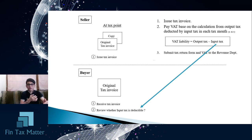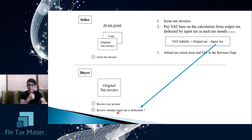At the tax point, the seller must issue a tax invoice — the original and at least one copy. The original is given to the customer or buyer. The buyer receives the original tax invoice and reviews whether it is a deductible input tax when making the VAT liability calculation each month.